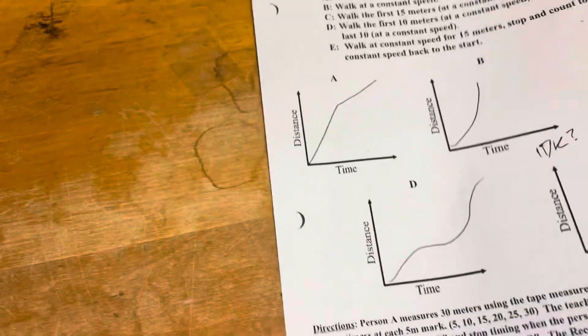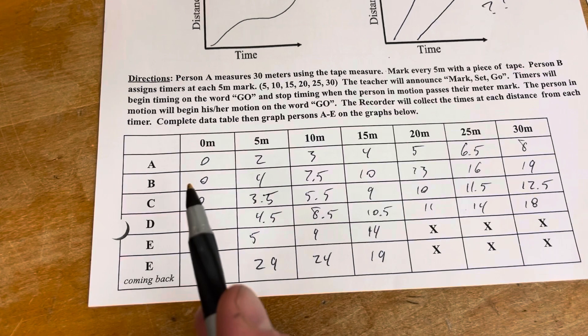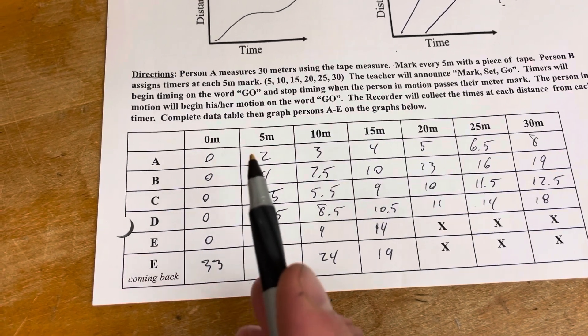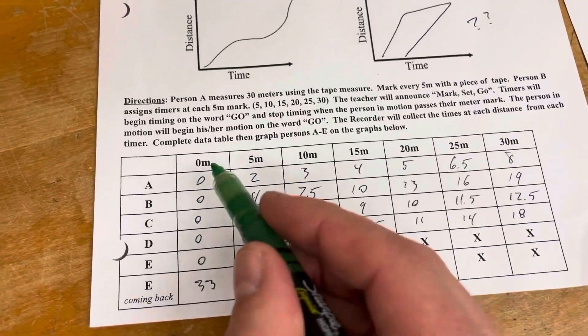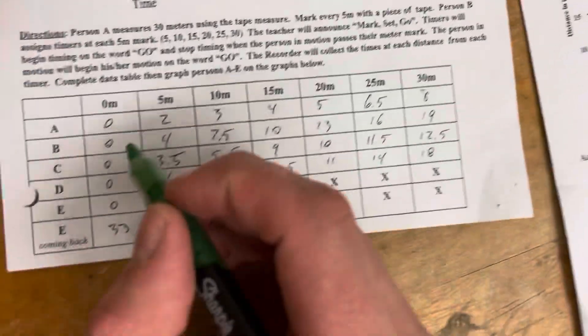If you flip that paper over, you will see person A graph paper. You're going to be recording each of these points on that graph paper, and I'm going to show you how to do that in this video.